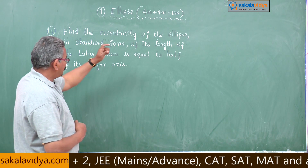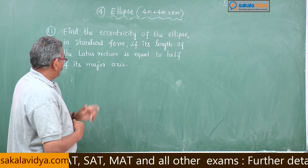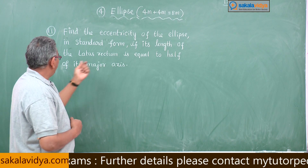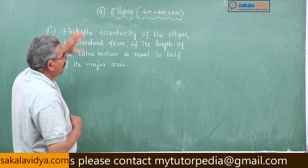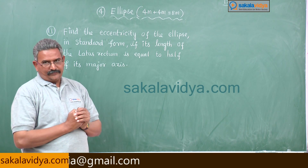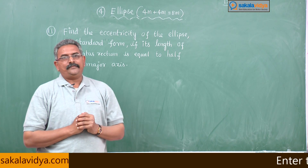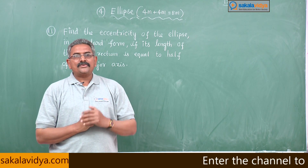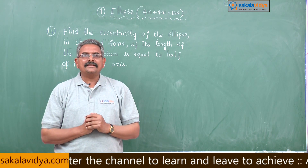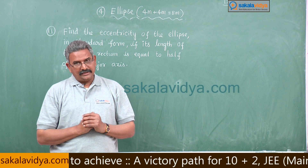In the ellipse x² / a² + y² / b² = 1, if the length of the latus rectum is equal to half of its major axis, then we have to find the eccentricity e. Let us recall: the length of the latus rectum is 2b²/a, the length of the major axis is 2a, and the length of the minor axis is 2b.